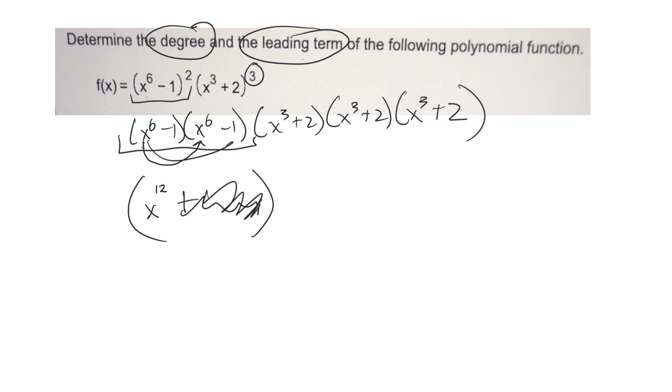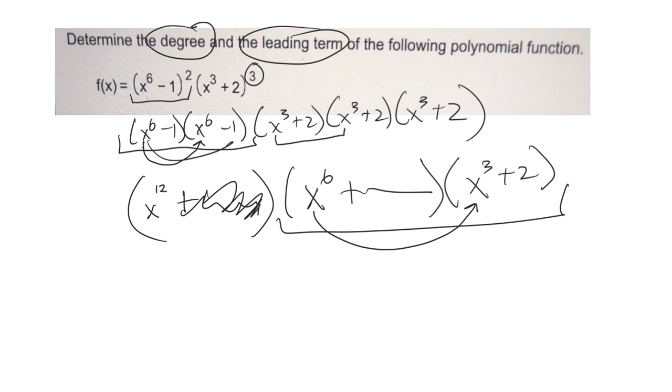So I don't really care what this stuff is. Same thing with this one. If I multiply those two, I'll get x to the 6th plus some other stuff, and then x cubed plus 2. And it doesn't matter what order you do these in, I'll just multiply these two together. x to the 6 times x cubed. Multiply common bases, add their exponents, so it'd be x to the 9th plus some other stuff.